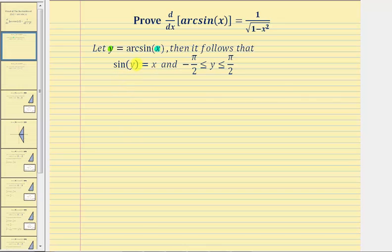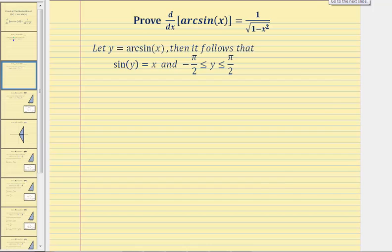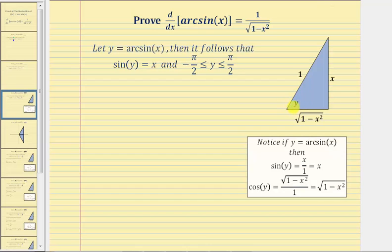For our next step, let's model angle y using a right triangle. If we have sine y equals x, written as x over one, since sine theta is equal to the ratio of the opposite side to the hypotenuse of any right triangle, we can label the opposite side x and the hypotenuse one. Therefore, using the Pythagorean theorem, we can label the adjacent leg the square root of the quantity one minus x squared.